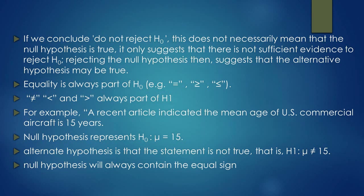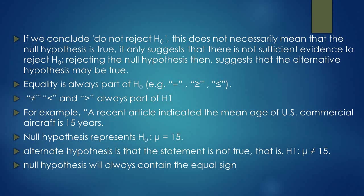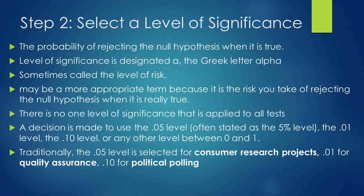For example, a recent article indicated the mean age of U.S. commercial aircraft is 15 years. So our null hypothesis will be mu equals 15, and our alternative hypothesis will be mu does not equal 15. If the alternative hypothesis statement is not true — mu does not equal 15 — our null hypothesis always contains the equality sign.